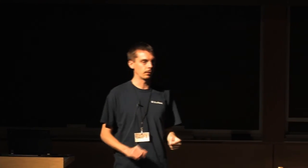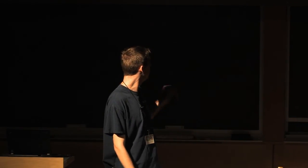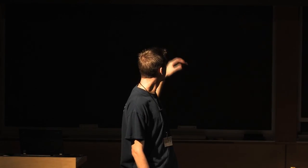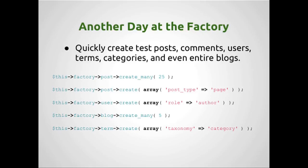The WordPress unit testing framework provides helpers for generating users, posts, categories, terms, and even blogs for those playing with multisite WordPress. As you can see from these examples, your unit test can easily create several different types of these objects with one line of code. Here I've created 25 posts, one page, and a user with the role of author. For any values you don't specify, it uses defaults. We've also created five blogs in here.